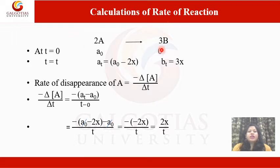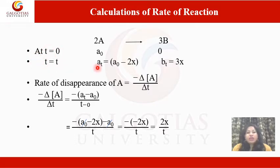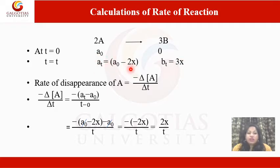Now let us see another example. There is a reaction: 2A converts into 3B. The stoichiometry of reactant A is 2 and of product B is 3. At time 0, the concentration of A is A₀ and the concentration of B is 0. After time T, the concentration of A is Aₜ and concentration of B is Bₜ. If Bₜ = 3X, then Aₜ = A₀ − 2X.